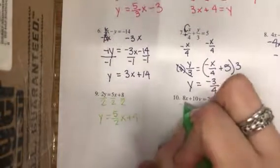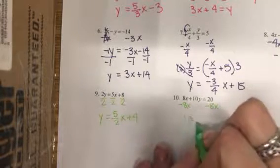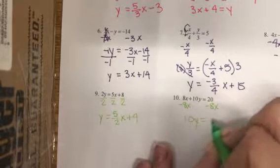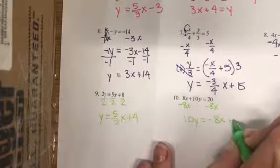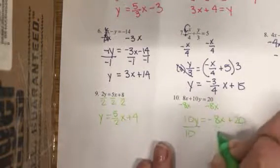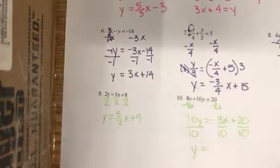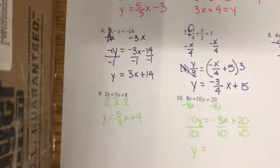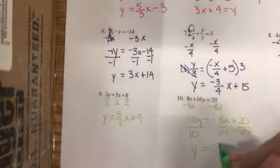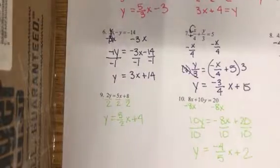Number ten: we'll move our positive 8x by subtracting 8x, giving us 10y equals negative 8x plus 20. Divide by 10 in all three places — these need to be reduced. Negative eight over ten reduces to negative four-fifths x, plus two.